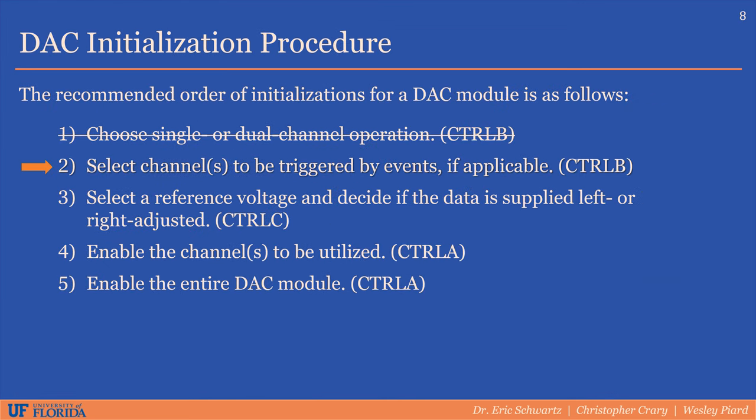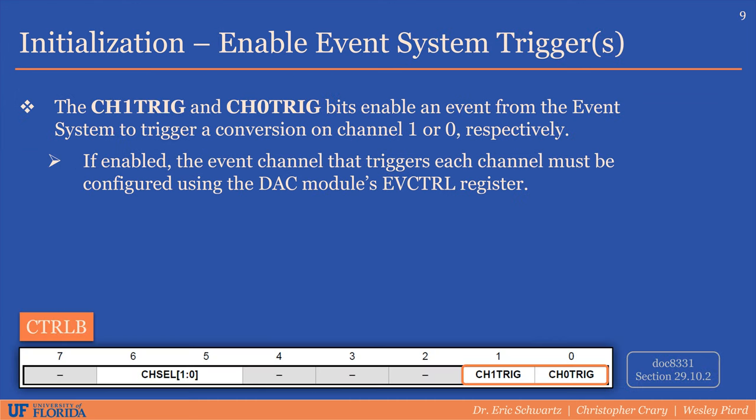Next, we'll decide if we want any of the channels to be triggered by the event system. The channel 1 and channel 0 trigger bits can be used to decide if a given channel should be triggered by the event system. If we do enable any of these bits, the event control register within the DAC system needs to be initialized to specify which event from the event system actually triggers a DAC conversion.